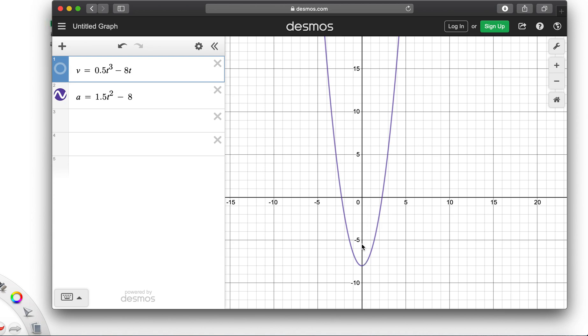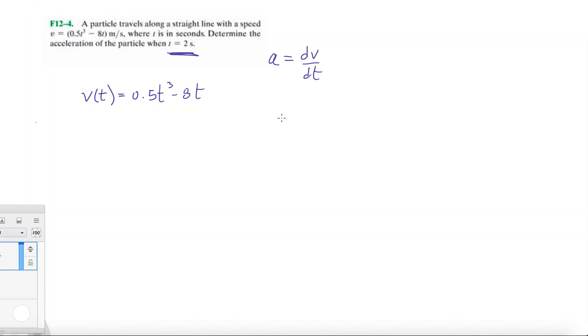And at t equals 0, we have minus 8. So that's what the, you know, plug in t equals 0 here, we have negative 8. Alright, so let's go back to the problem. So let's plug in our velocity function into this equation. 0.5t cubed minus 8t.